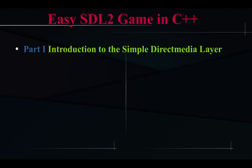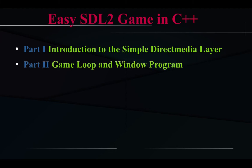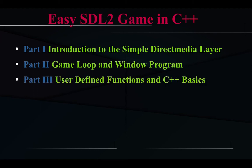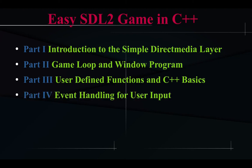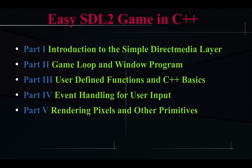In our first part of this video series, we will discuss using the Simple Direct Media Layer — the installation and so forth. How to create an event loop and make a window in part 2. In part 3, we will talk about user-defined functions and other basic C++ concepts. We will move on to, in part 4, event handling for the user. And in part 5, we will talk about rendering pixels and other geometric primitives using the Simple Direct Media Layer.